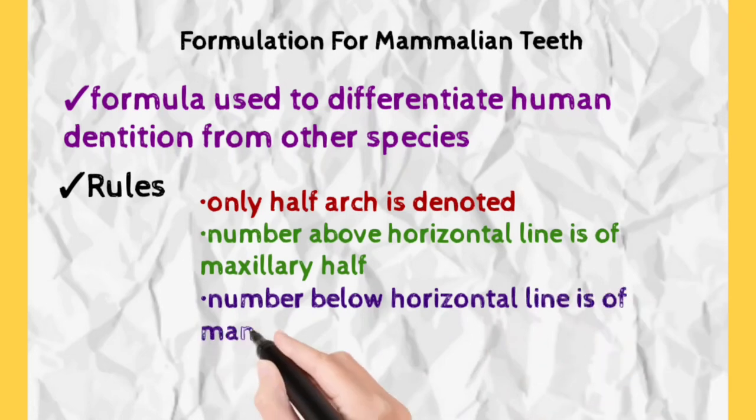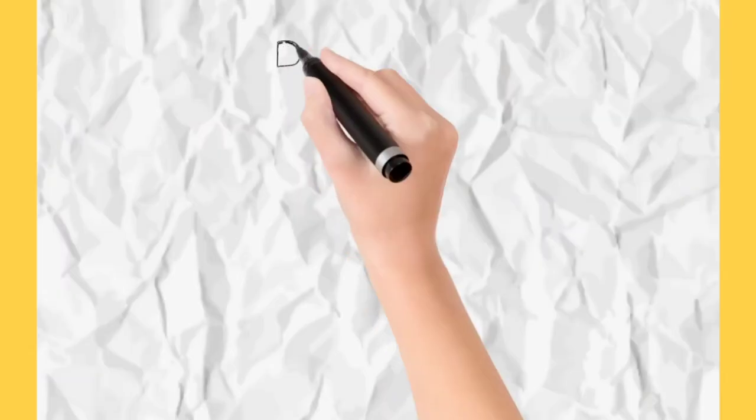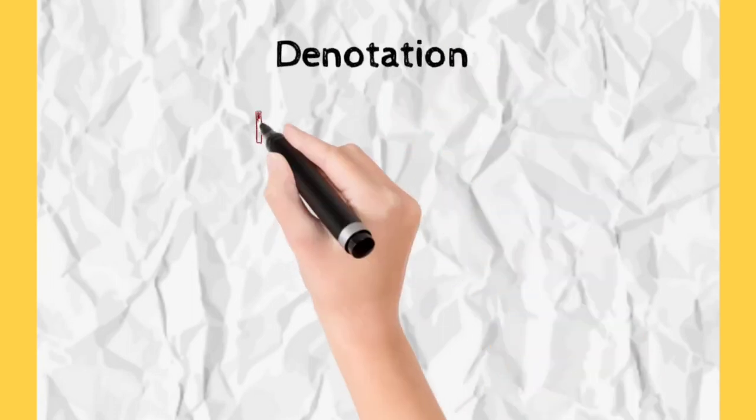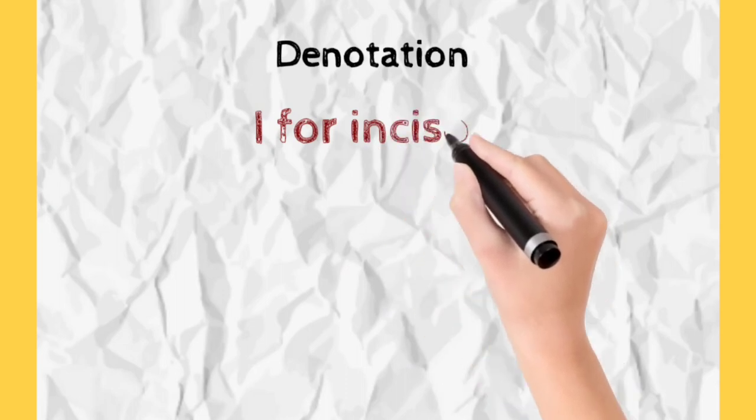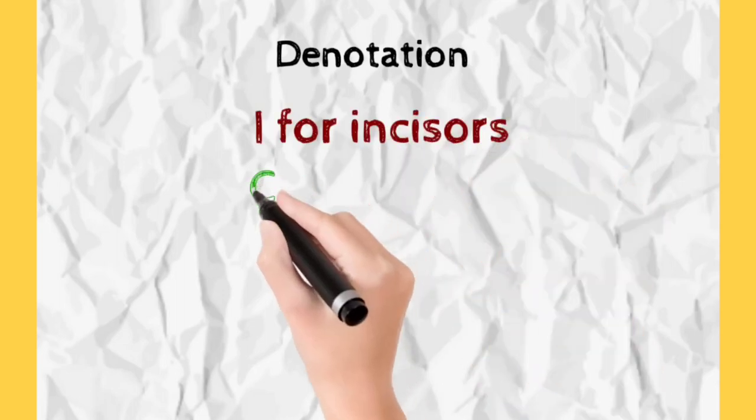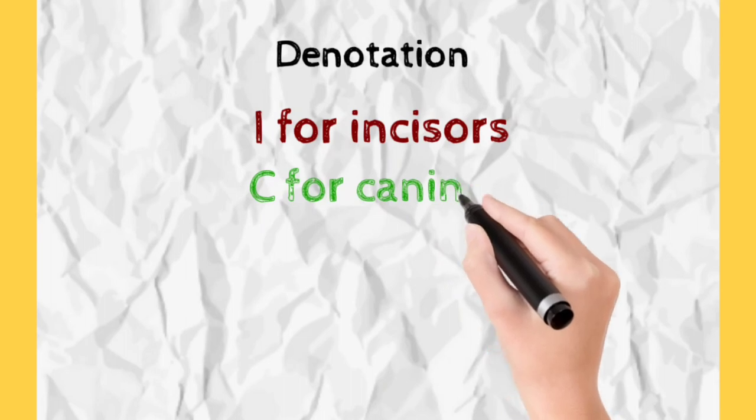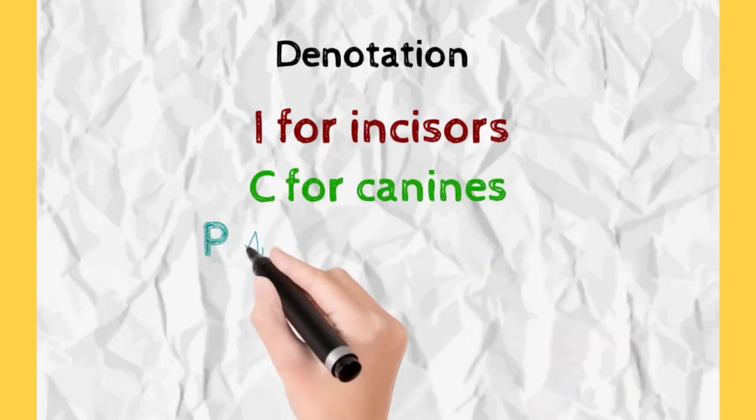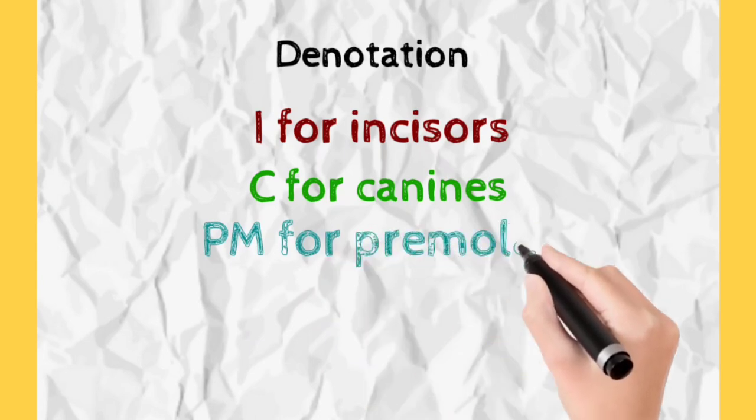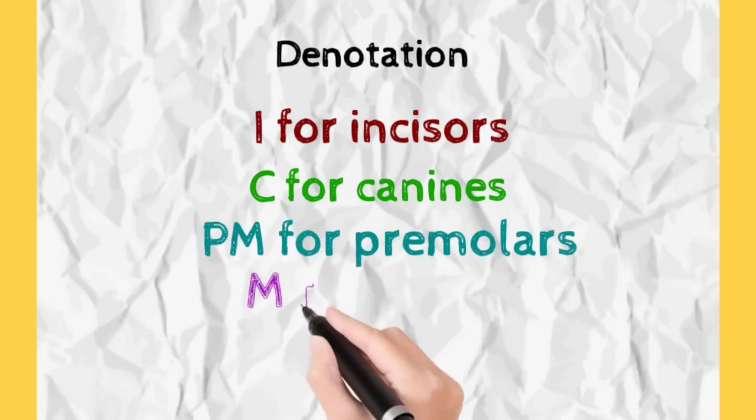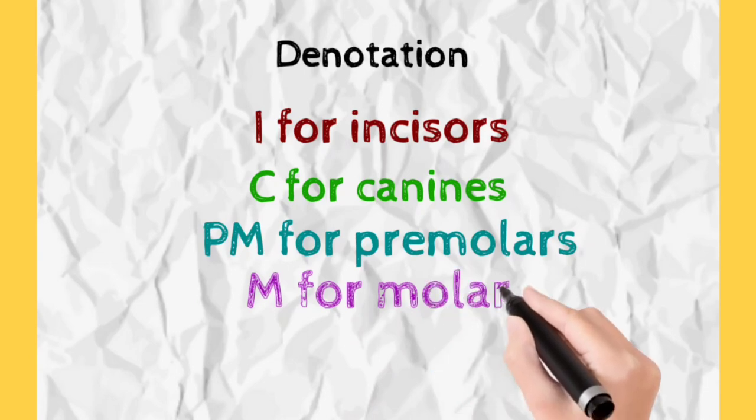Various denotations which we use in dental formula - I represents incisors, C represents canines, PM represents premolars, and M represents molars. We use all these denotations to tell the number of teeth in each category in that given species. We are talking about human dental formula.